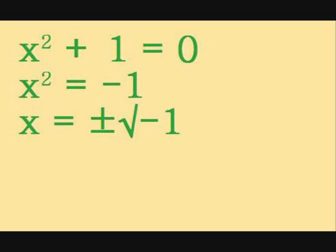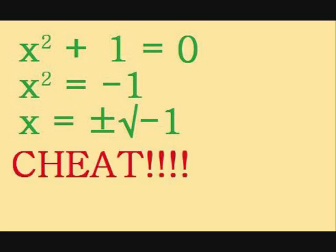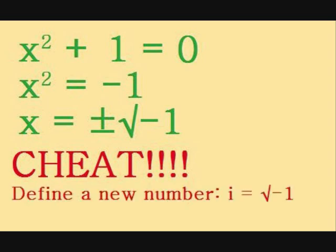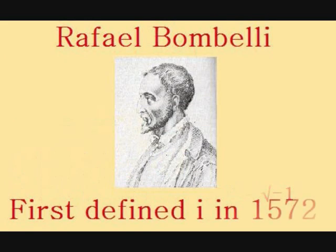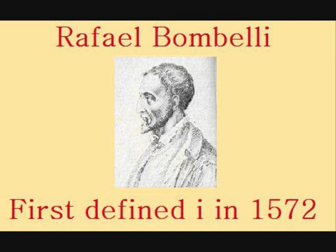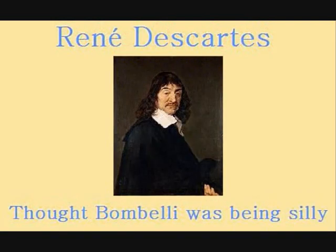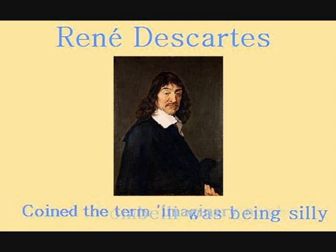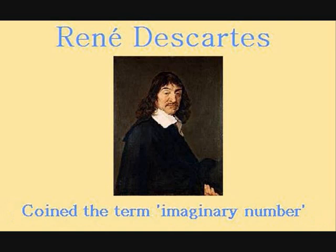The answer is simple: we cheat a little bit. We pretend that the square root of minus 1 does exist, and we denote it by the letter i. The first person to do this was an Italian mathematician by the name of Raphael Bombelli in AD 1572. At this time, many mathematicians dismissed this new number as ridiculous, including René Descartes, who referred to i as an imaginary number.